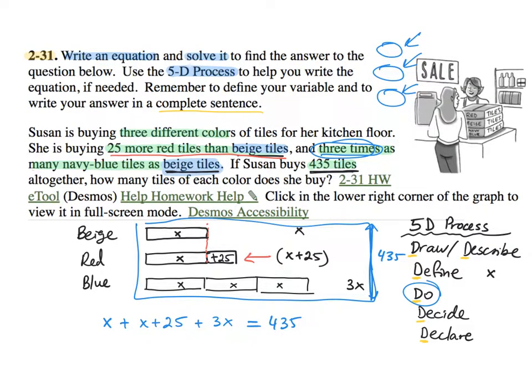So right now, the first part in our directions says write an equation, we just did. So by us making it equal, we wrote the equation. Now we want to solve the equation. So looking at the picture, how many X's do we have? So combine like terms.